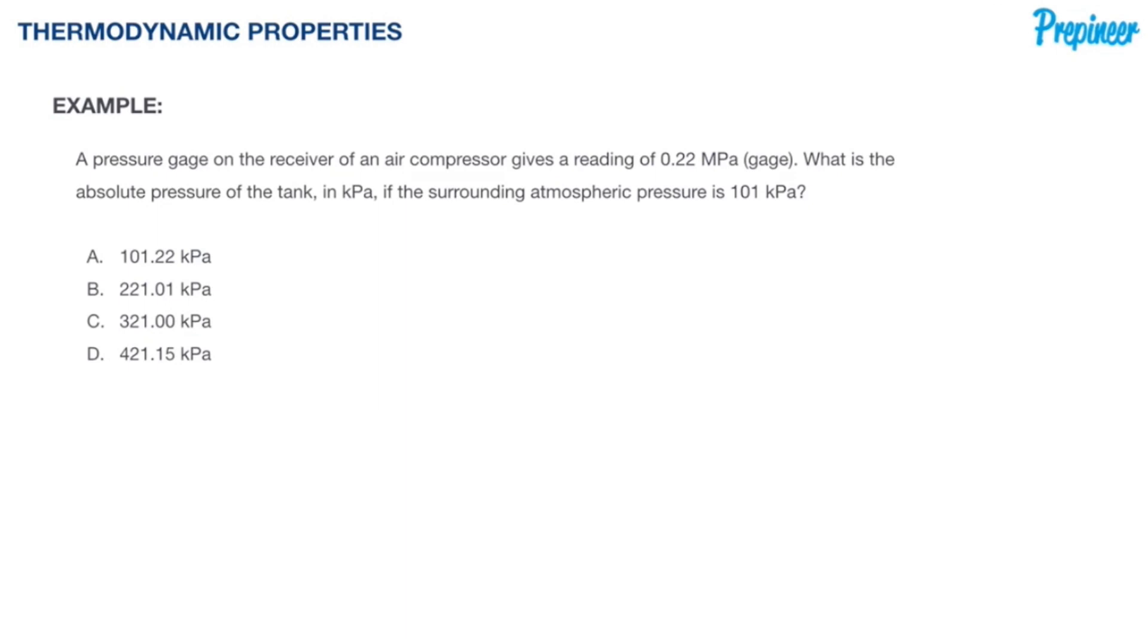The problem states: A pressure gauge on the receiver of an air compressor gives a reading of 0.22 MPa (gauge). What is the absolute pressure of the tank in kPa if the surrounding atmospheric pressure is 101 kPa?